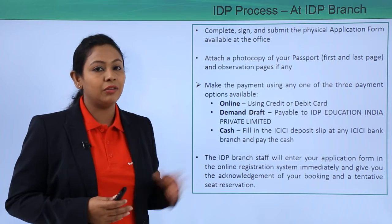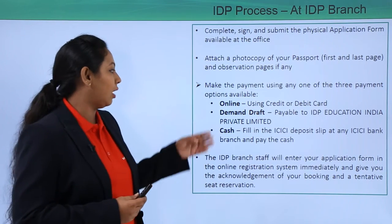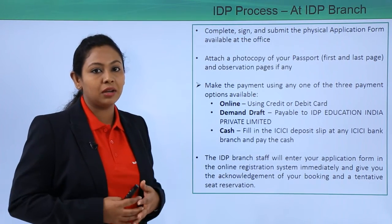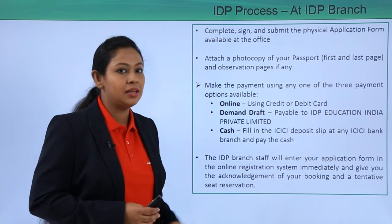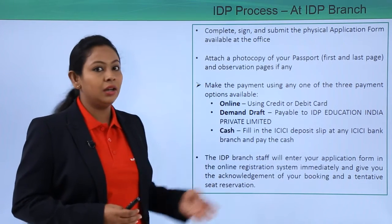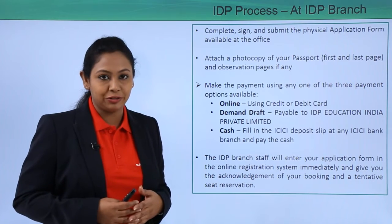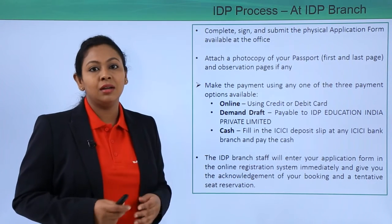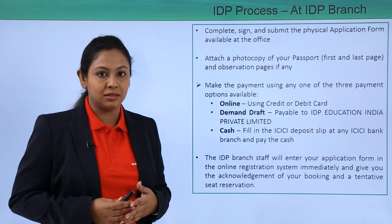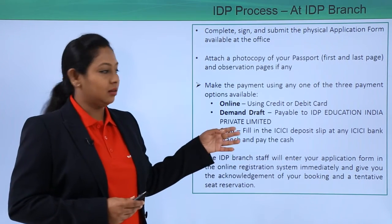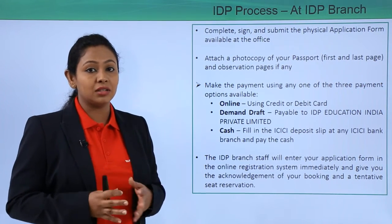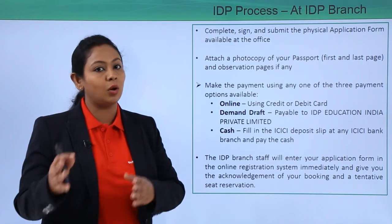For online payment at the branch, you can use either a credit or debit card. Then you have the demand draft and cash method — similar to the British Council method — where you make a demand draft payable to IDP Education India Private Limited (this depends on the country from where you're registering). For cash, you go to an ICICI Bank branch, deposit cash using a cash deposit slip, collect the receipt, pin all documents to the application form, and hand it to the IDP staff at the branch. They will transfer details to the online portal and give you an acknowledgement with a tentative seat booking.